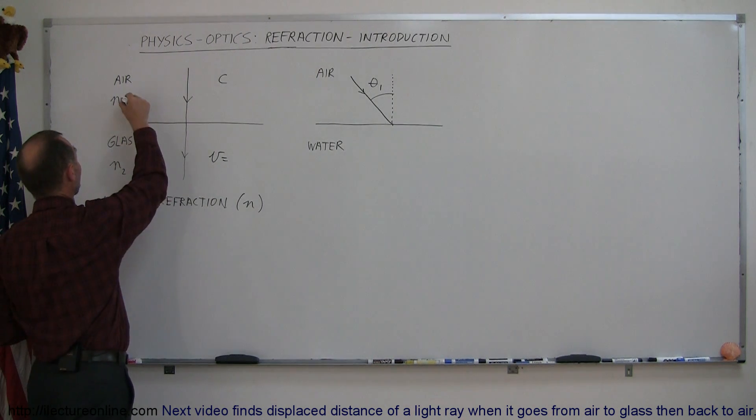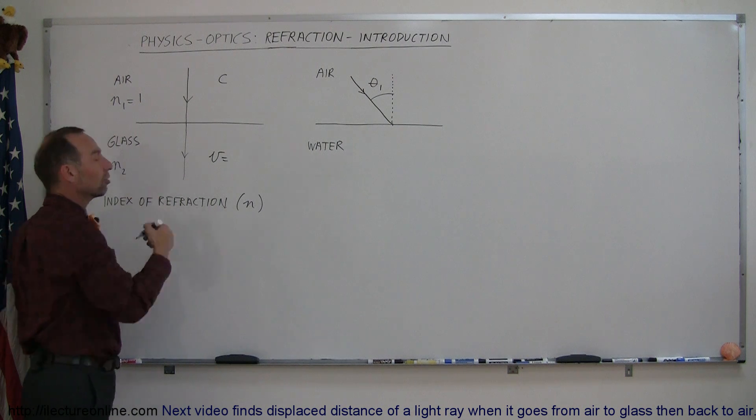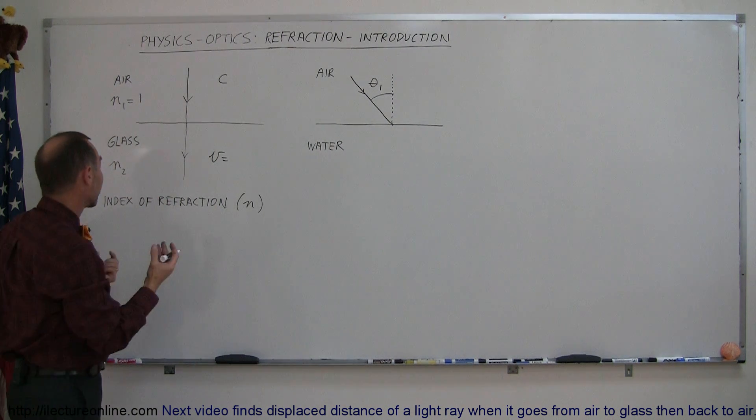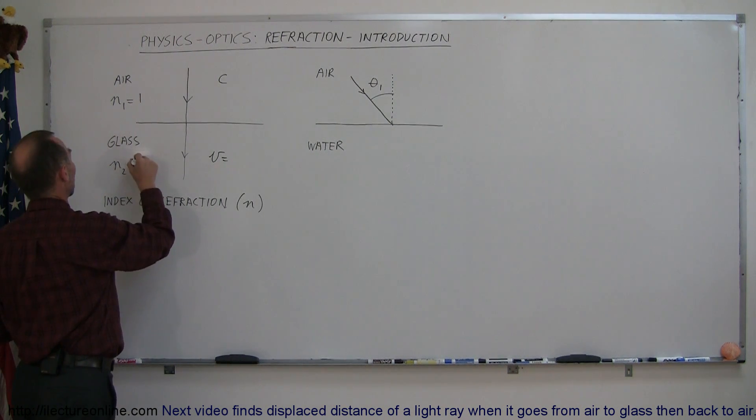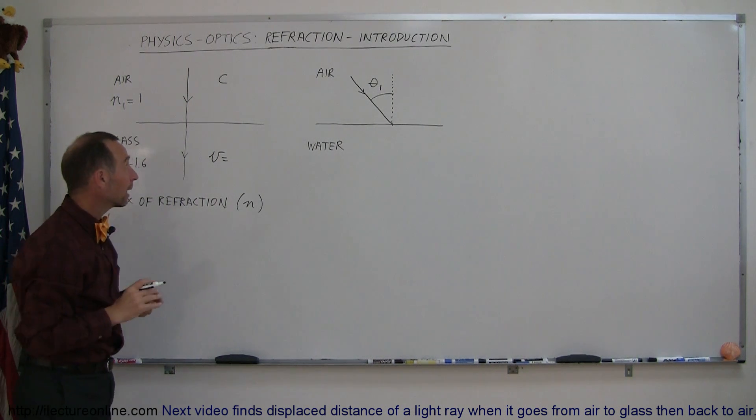Now for air, the index of refraction happens to be one, and for any other substance it tends to be more than one. So for glass it's typically maybe like 1.5 or 1.6. Let's call it 1.6.